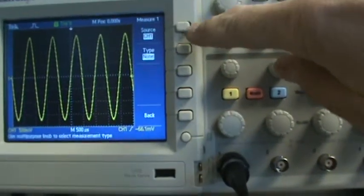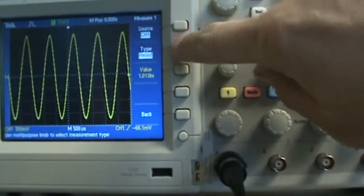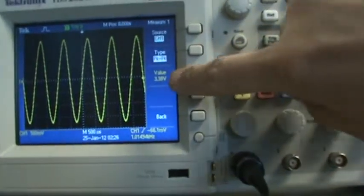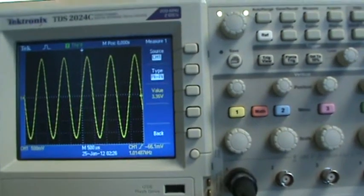With these digital oscilloscopes there's a measure button. So channel one, we want to measure peak to peak.